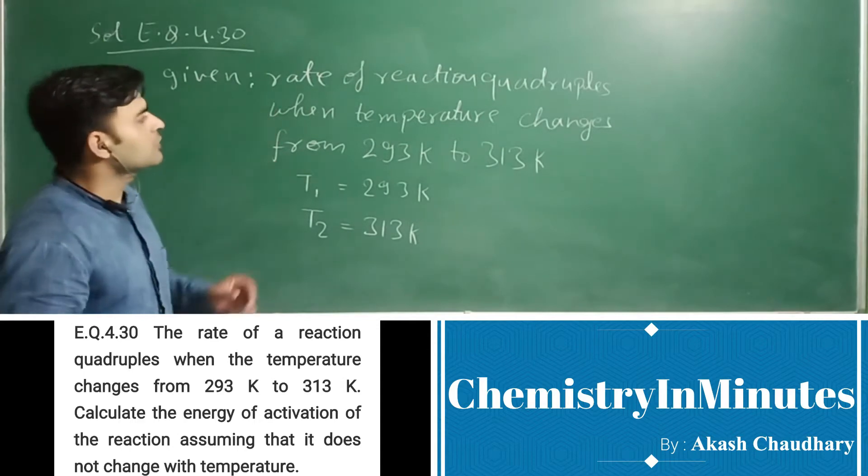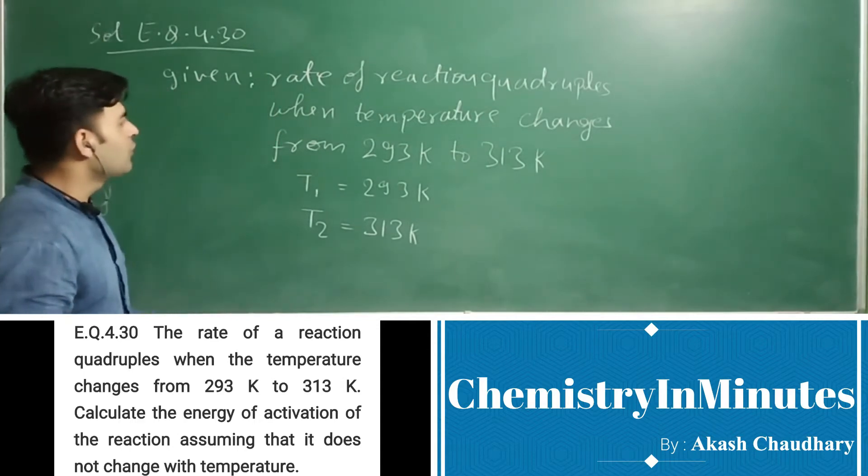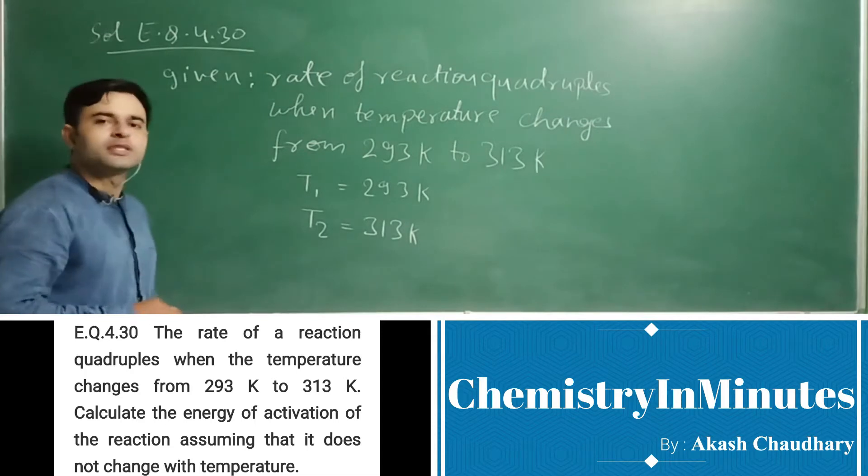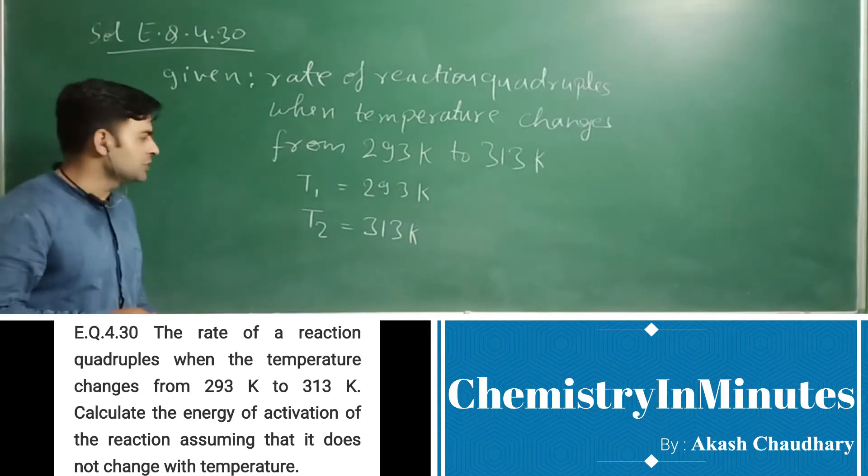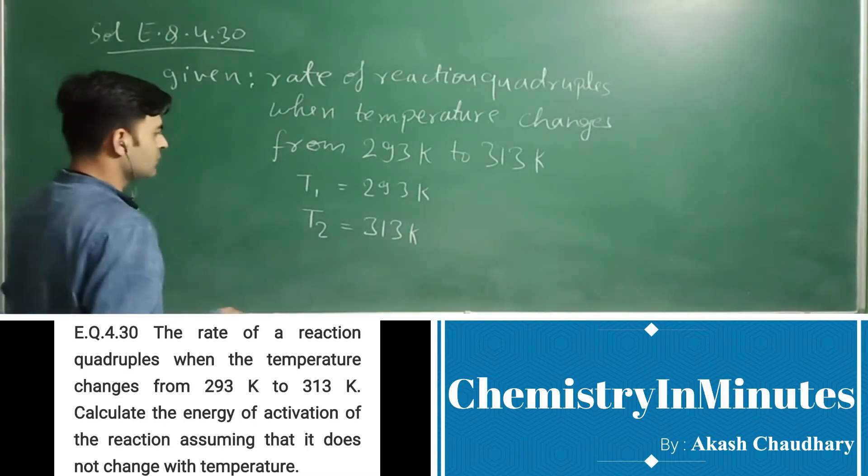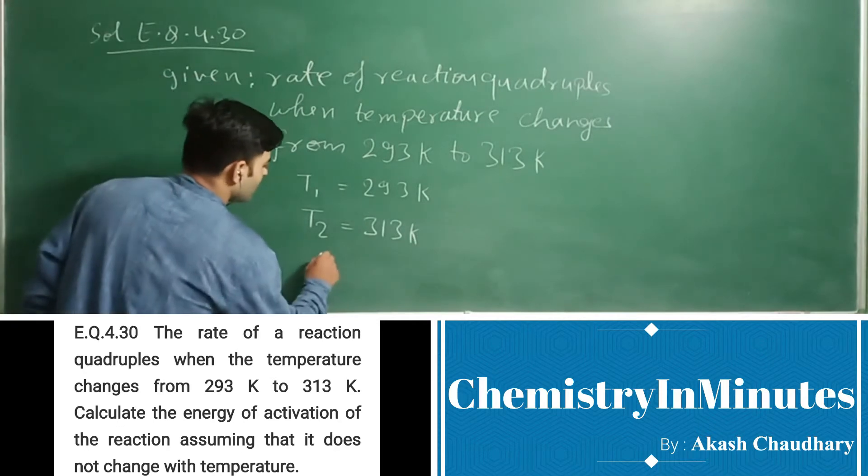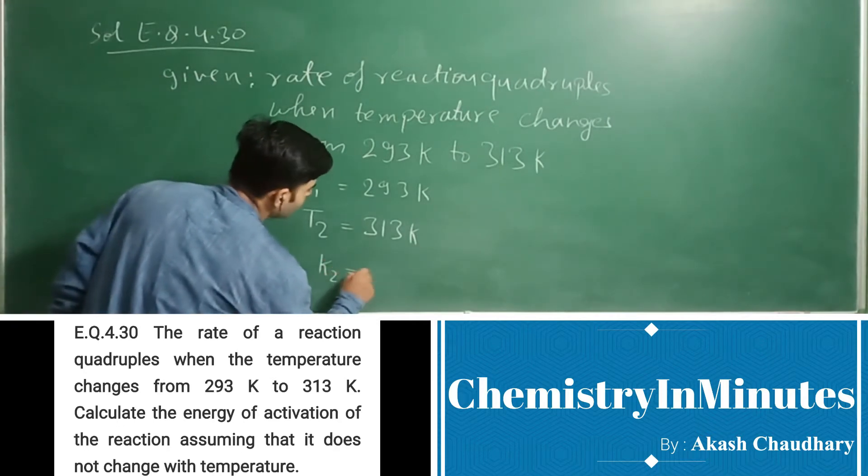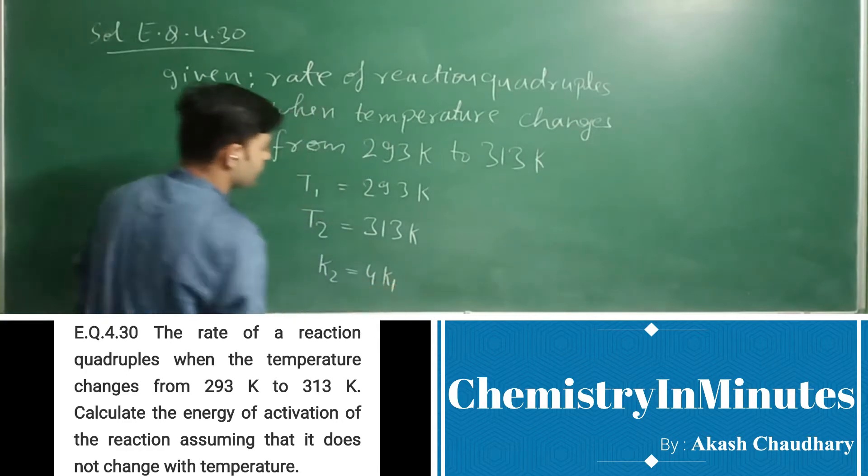the rate of reaction quadruples means rate constant becomes 4 times, because the concentration of reactants is not changed in the question. So K2 equals 4 times K1.